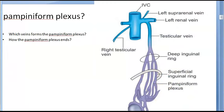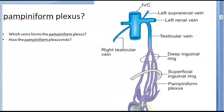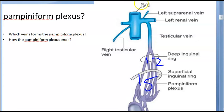The pampiniform plexus is a group of veins that drain the testis, epididymis, vas deferens, and the cremaster muscle. Initially there are around 15 to 25 veins, then it reduces to 12, then at the level of the superficial inguinal ring it becomes around four to five, then around two at the deep inguinal ring, and finally joins to form a single vein.